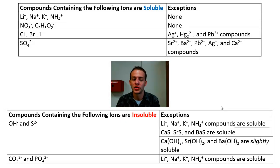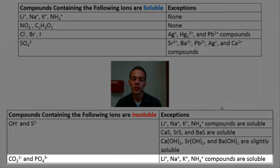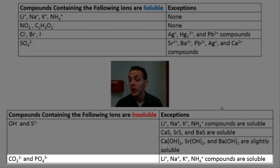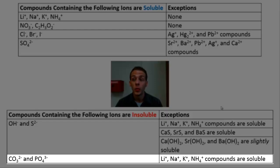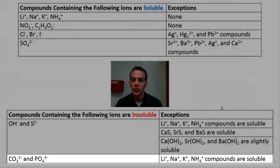The final solubility rule covers carbonates and phosphates, which are generally insoluble. The only exception is when carbonate or phosphate ion pairs with lithium, sodium, potassium, or ammonium ion — in those cases, the carbonates and phosphates are soluble.